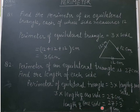Length of one side is equal to 27 cm divided by 3 is equal to 9 cm. So, answer is length of one side of equilateral triangle is equal to 9 cm. Thank you.